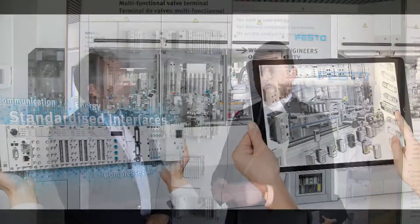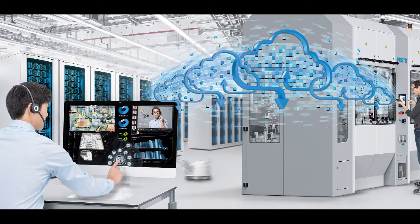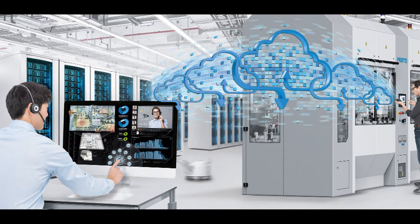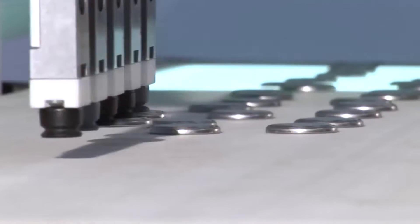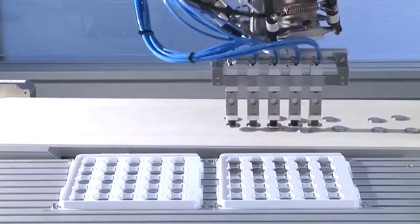From an automation standpoint, the core components are vertical integration — which is top floor to shop floor communication — and the idea of end-to-end engineering: communicating and coordinating engineering data along the entire value chain. The Industrial Internet of Things enables us to communicate with our automation components, harvest data, and translate it into useful information. It's the idea of big data connecting us to the physical operation.